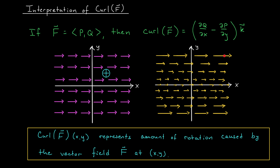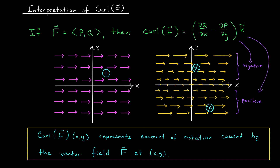If instead I place that same object in the river on the right, something very different happens. Placed up here, the river still pushes it to the right, but there's more force acting from the top than the bottom, so the object actually rotates clockwise — that's the negative direction, giving a negative curl value. Placed down here, there's a greater force from the bottom, causing counterclockwise rotation — the positive direction, giving a positive curl value. So the takeaway is: the curl represents the amount of rotation caused by our vector field at the point (x, y).